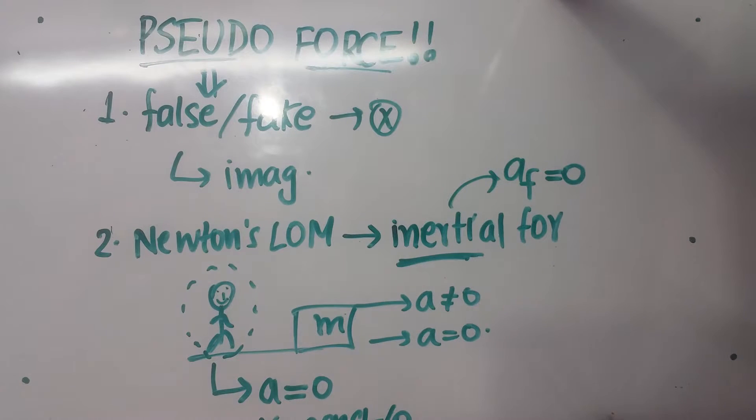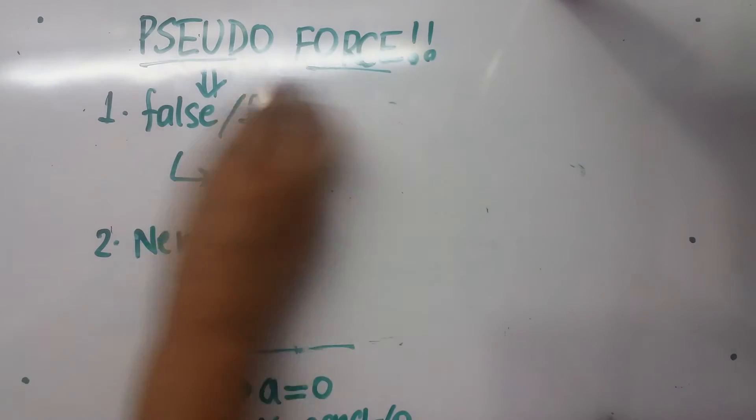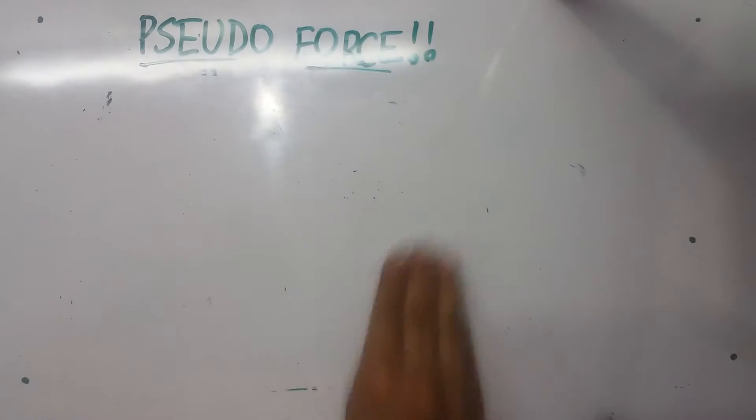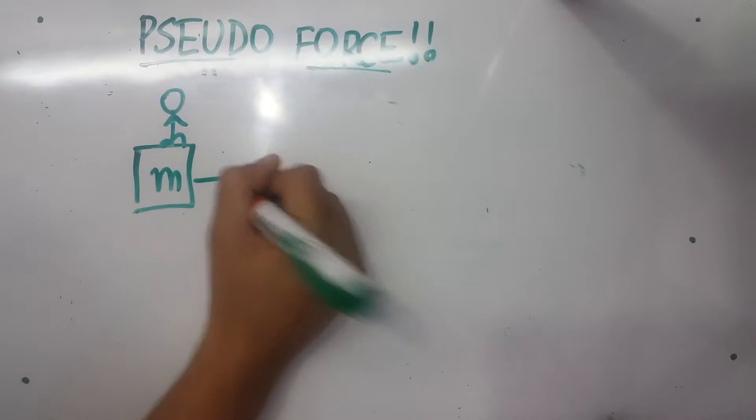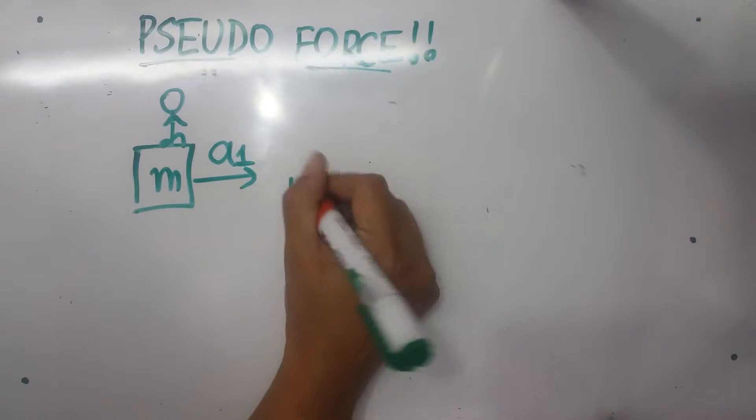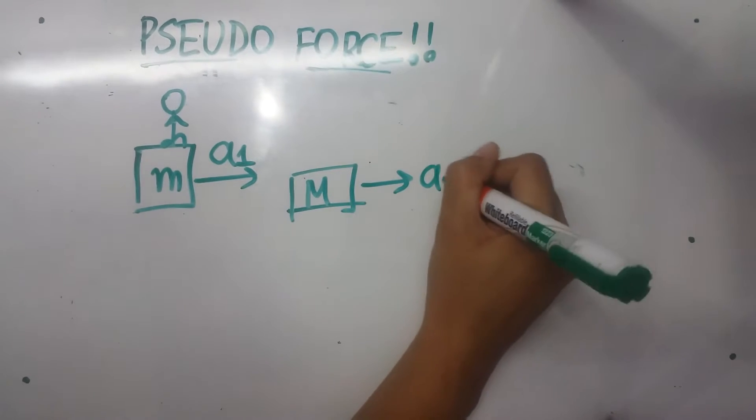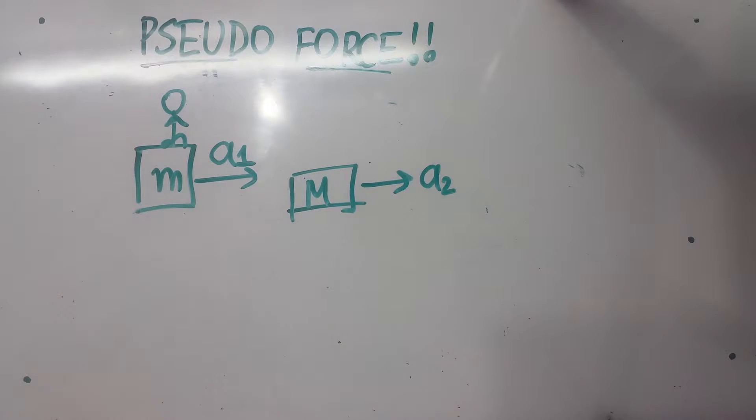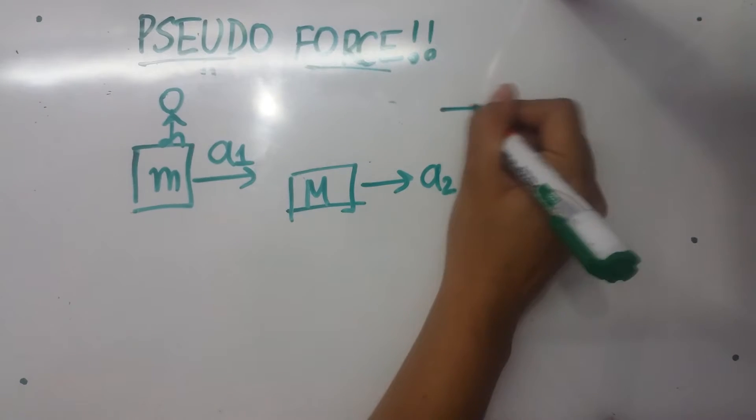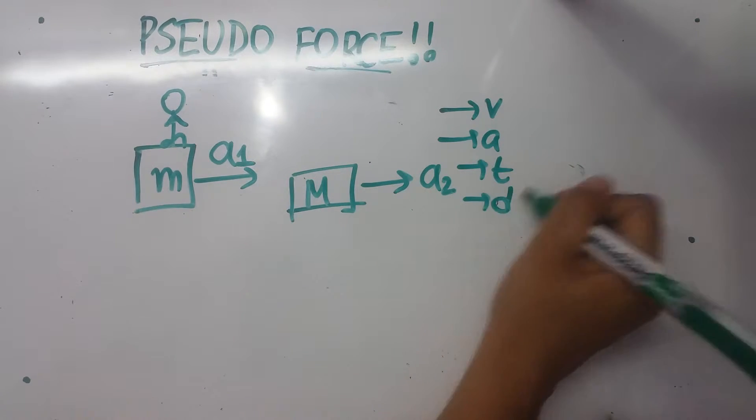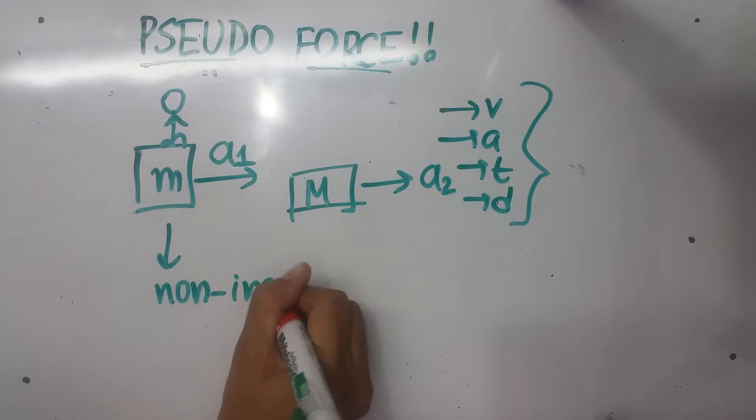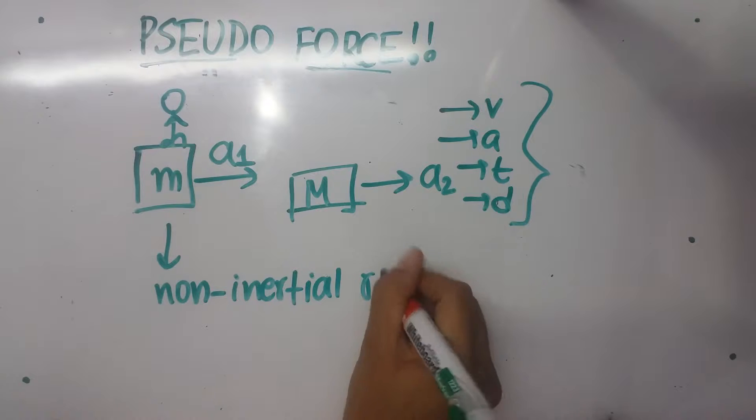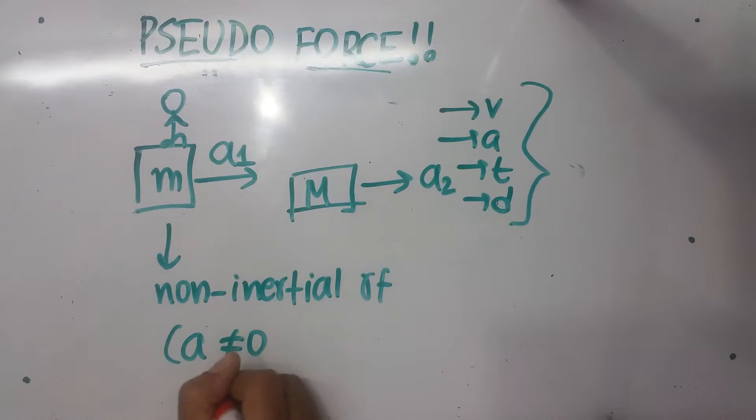Where the concept of pseudoforce is really handy is this: Suppose I'm standing on a cart of mass m, which is accelerating with acceleration a1, and I'm seeing a block of mass M accelerating with acceleration a2. How do I find all the quantities Newton's laws used to give me - velocity, acceleration, time, distance? I can't do any of this because my reference frame is a non-inertial reference frame. I have an acceleration which is non-zero. So I cannot apply Newton's laws of motion.